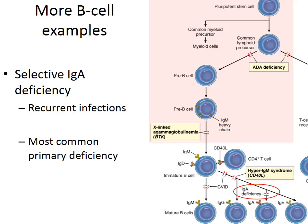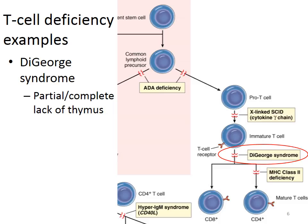A further B cell example is IgA deficiency. These patients are subjected to recurrent infections and have trouble making IgA. These infections typically occur where IgA is normally present — either in blood, which is the IgA1 subtype, or in body secretions, which is the IgA2 subtype. IgA deficiency happens to be the most common primary deficiency that we see.